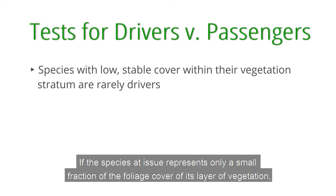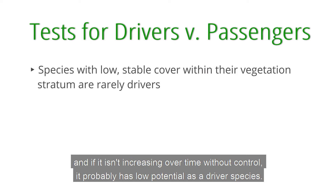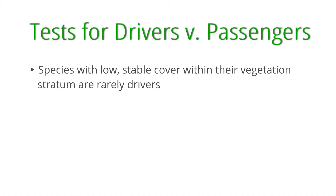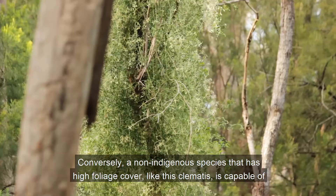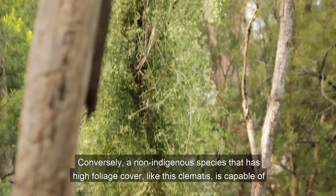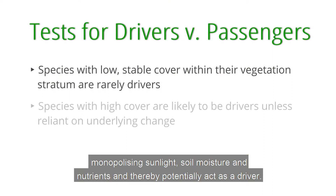Here are some tests I use most commonly. The first is a screening test: if the species represents only a small fraction of the foliage cover of its layer of vegetation, and if it isn't increasing over time without control, it probably has low potential as a driver species — unless it has unusual properties such as being quite toxic to wildlife. Conversely, a non-indigenous species with high foliage cover, like this clematis, is capable of monopolising sunlight, soil moisture, and nutrients, and thereby potentially acting as a driver.